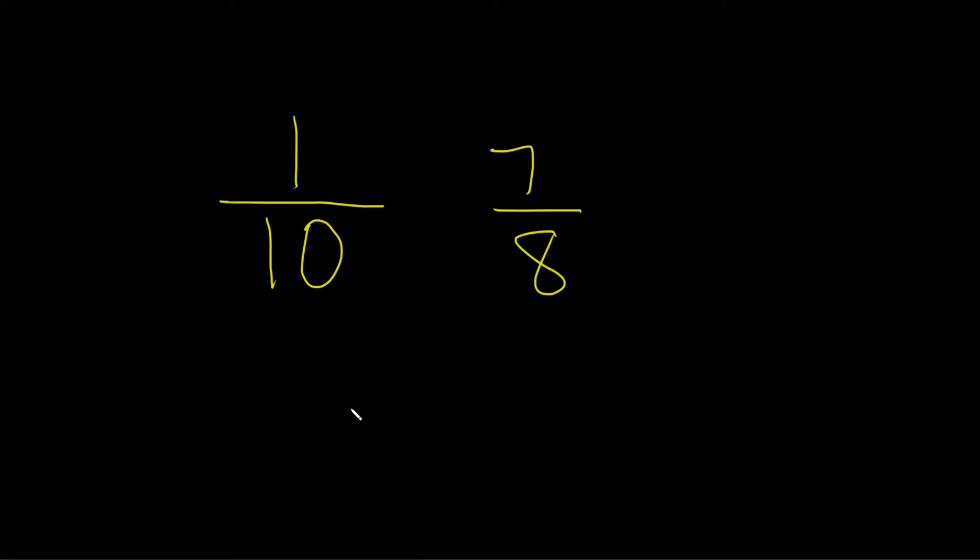So in this case, we want to find a common denominator. An easy one we can use can be found just by multiplying the 10 and the 8. 10 times 8 is 80, so we can go ahead and use 80 if we like.